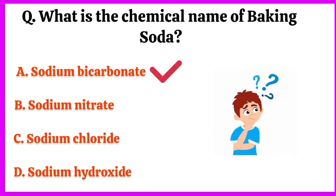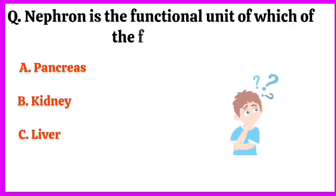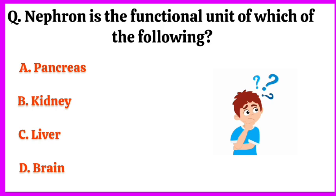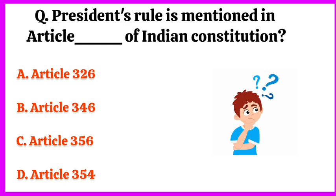What is the chemical name of baking soda? The correct answer is option A: sodium bicarbonate. Nephron is the functional unit of which of the following? The correct answer is option B: kidney.